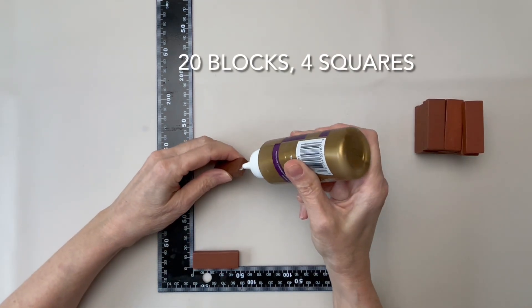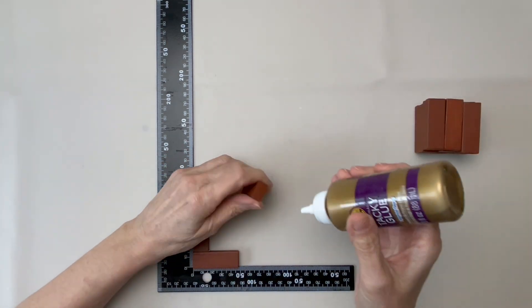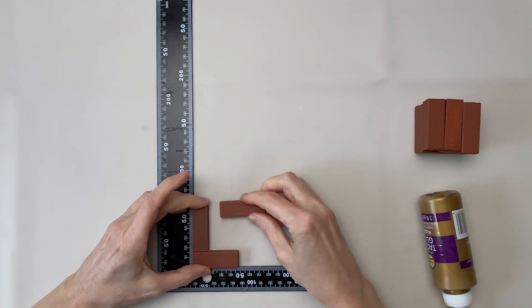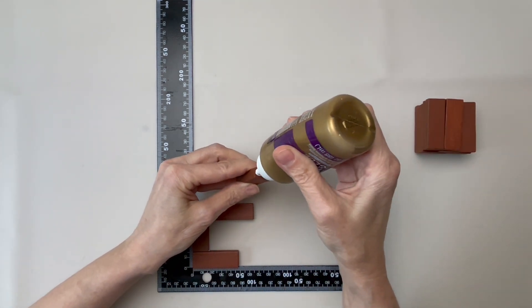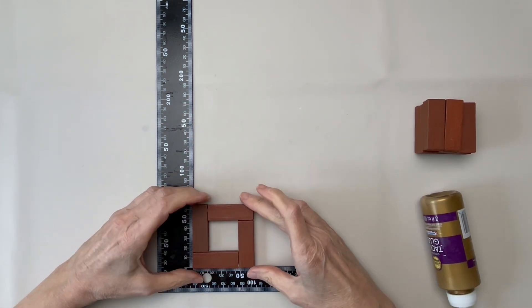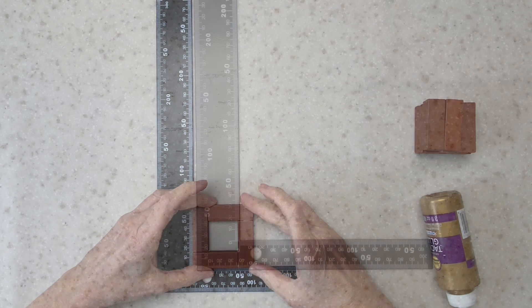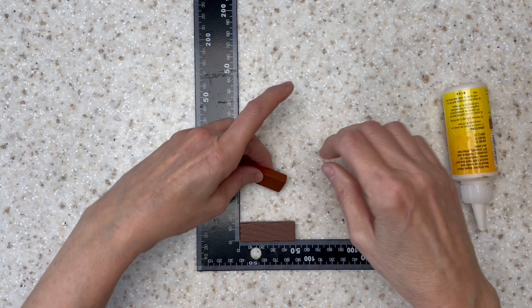Start by making four squares. Be as accurate as you can be. Next, make two sets of L's and wait for everything to dry.